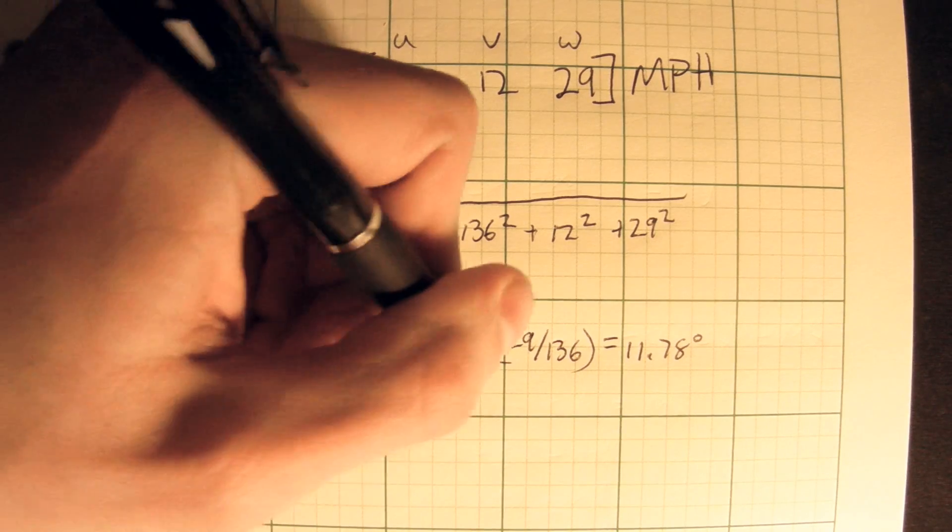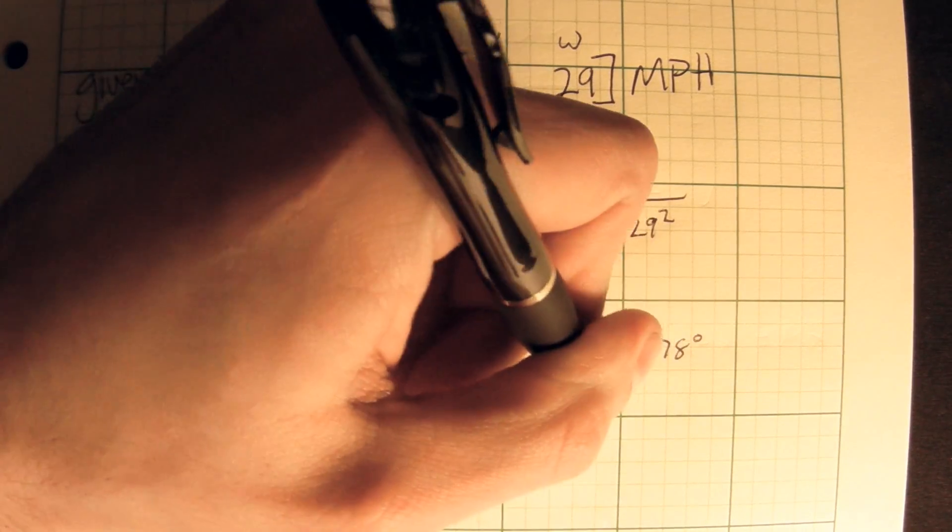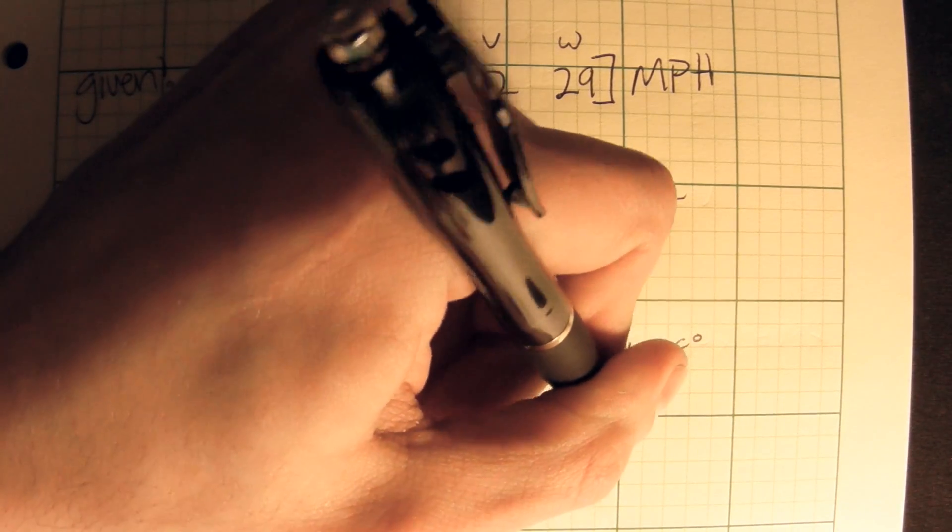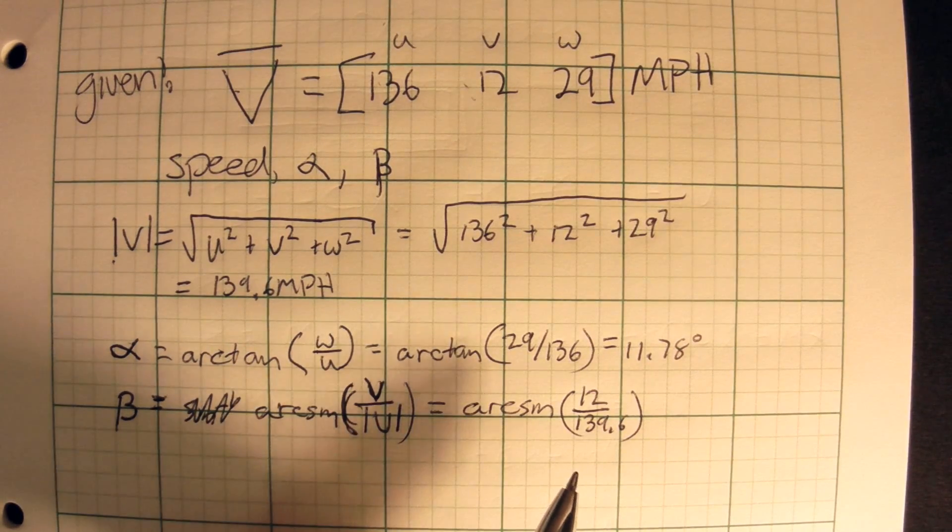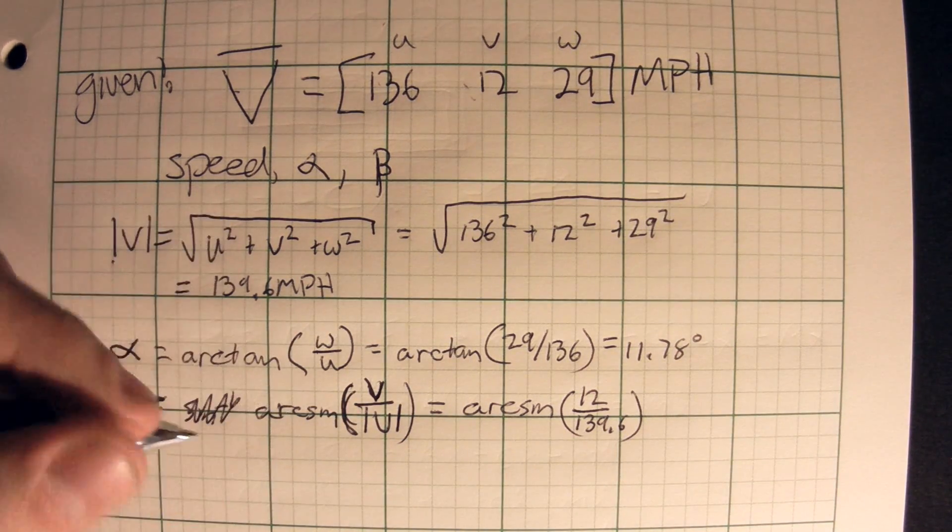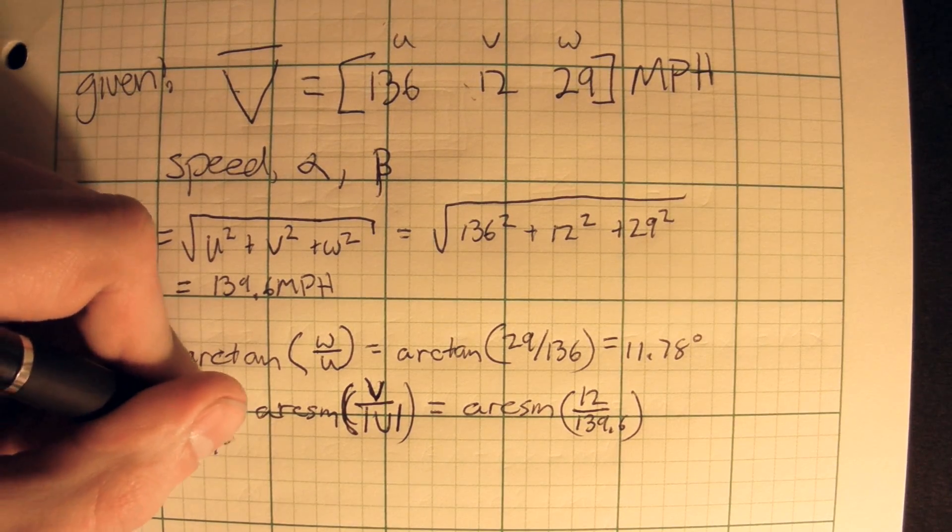Now let's plug in some numbers. So arc sine of 12 over 139.6. So let's plug these into the calculator. And what does the calculator say? It says that this is about 4.93 degrees.